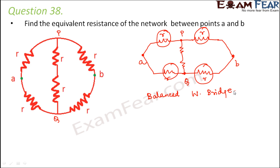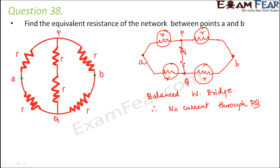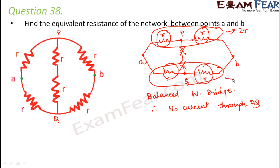In a balanced Wheatstone bridge, no current flows through the arm PQ. Therefore, the two resistances across PQ do not play any role and can be ignored. The two remaining resistances on each path are in series: R + R = 2R. Again on the other path: R + R = 2R. These two 2R values are in parallel.